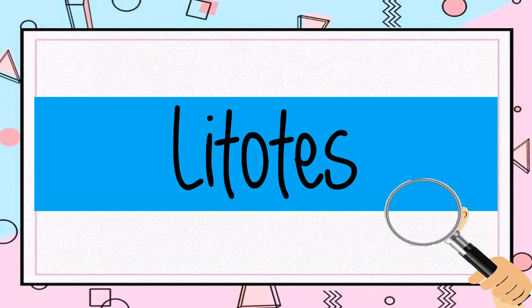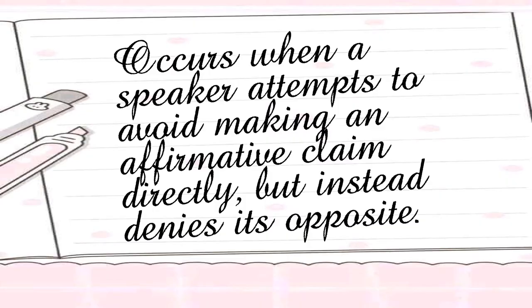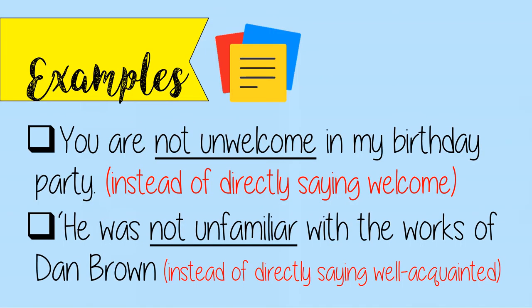Next is litotes. Litotes occurs when a speaker attempts to avoid making an affirmative claim directly, but instead denies its opposite. Examples: 'You are not unwelcome in my birthday party,' instead of directly saying 'you are welcome in my birthday party.' Another: 'He was not unfamiliar with the works of Dan Brown,' instead of saying 'he is well acquainted with the works of Dan Brown.'